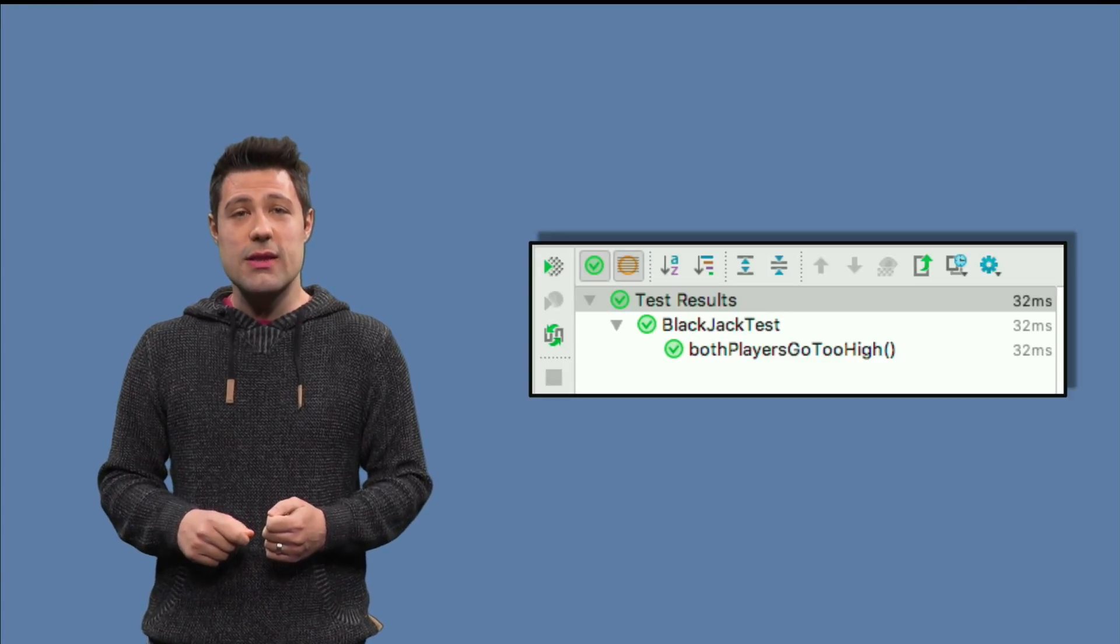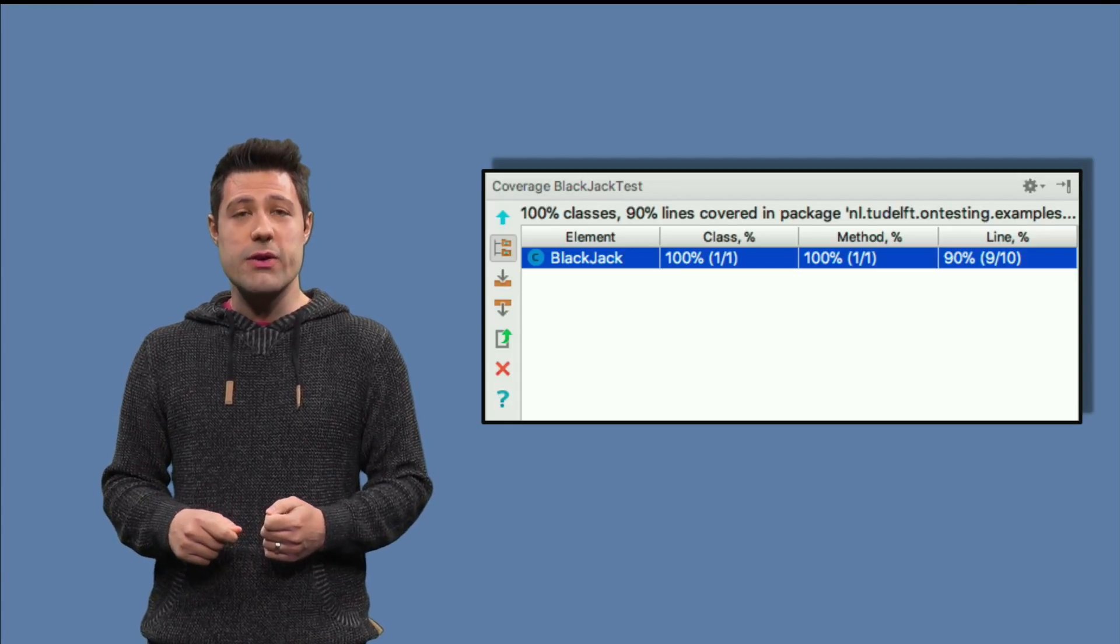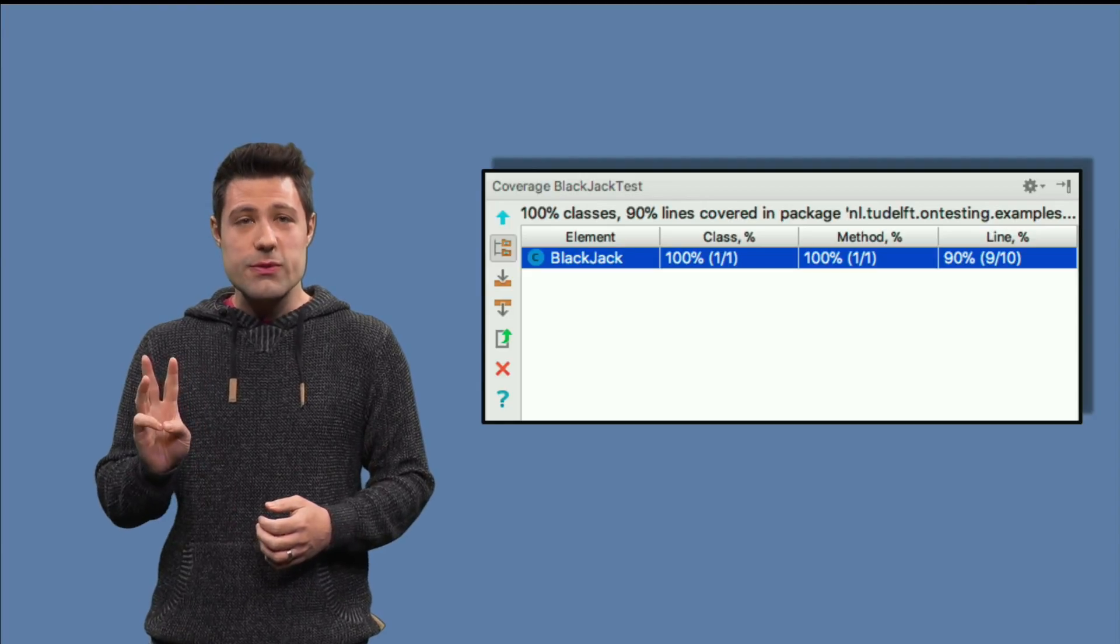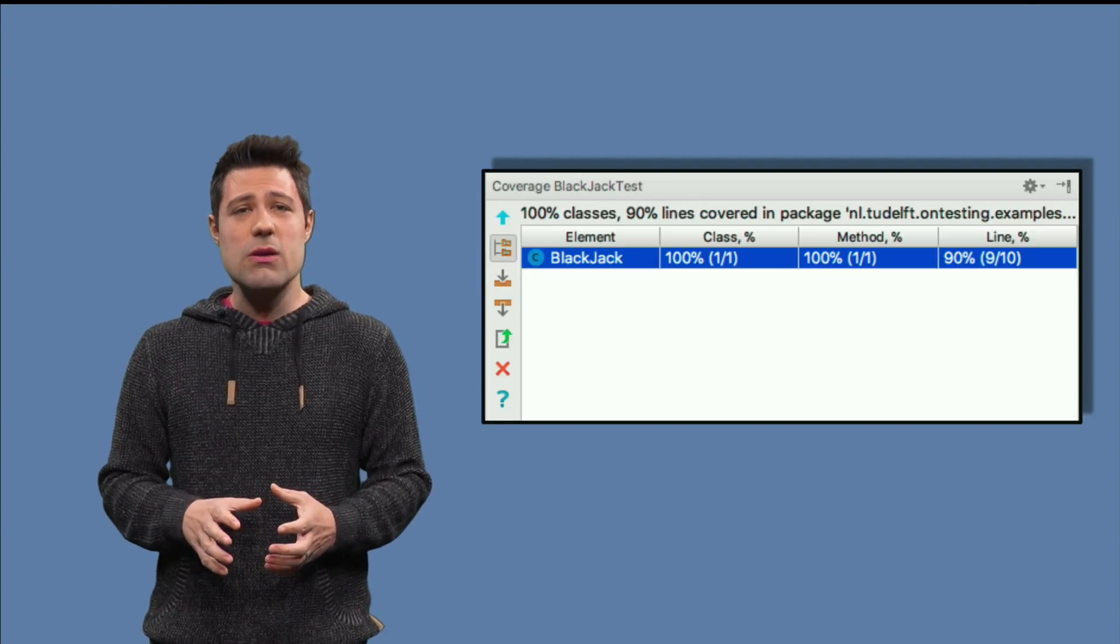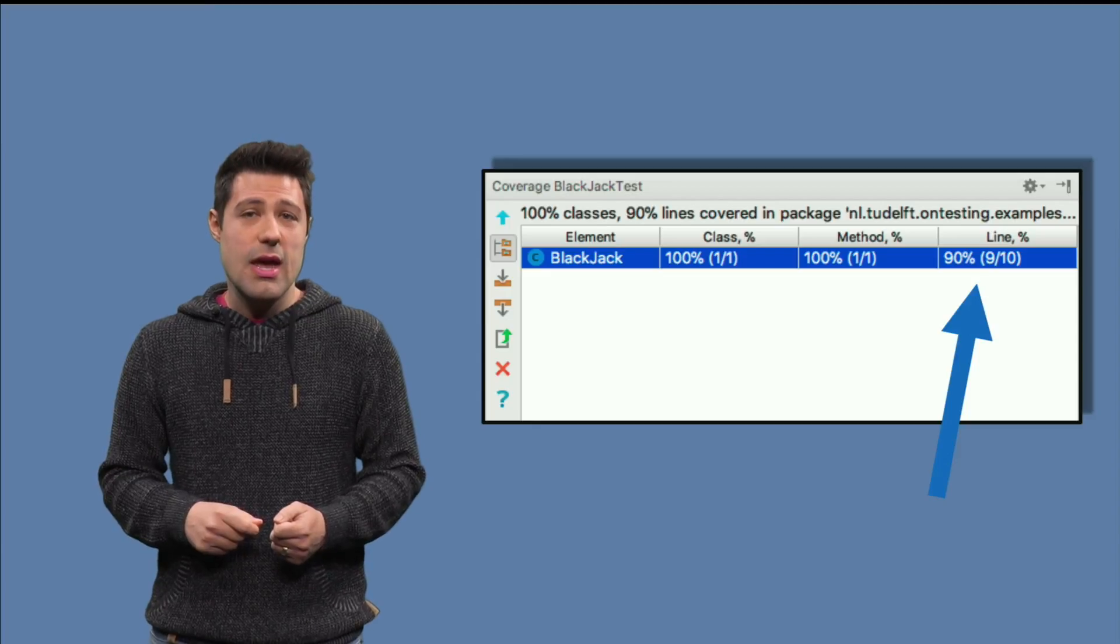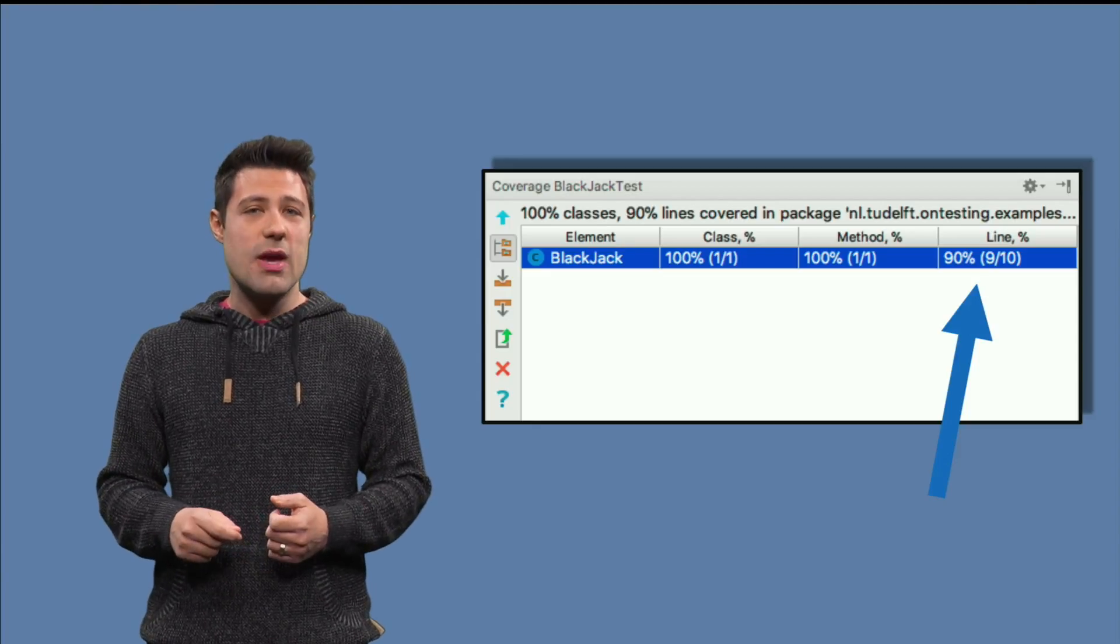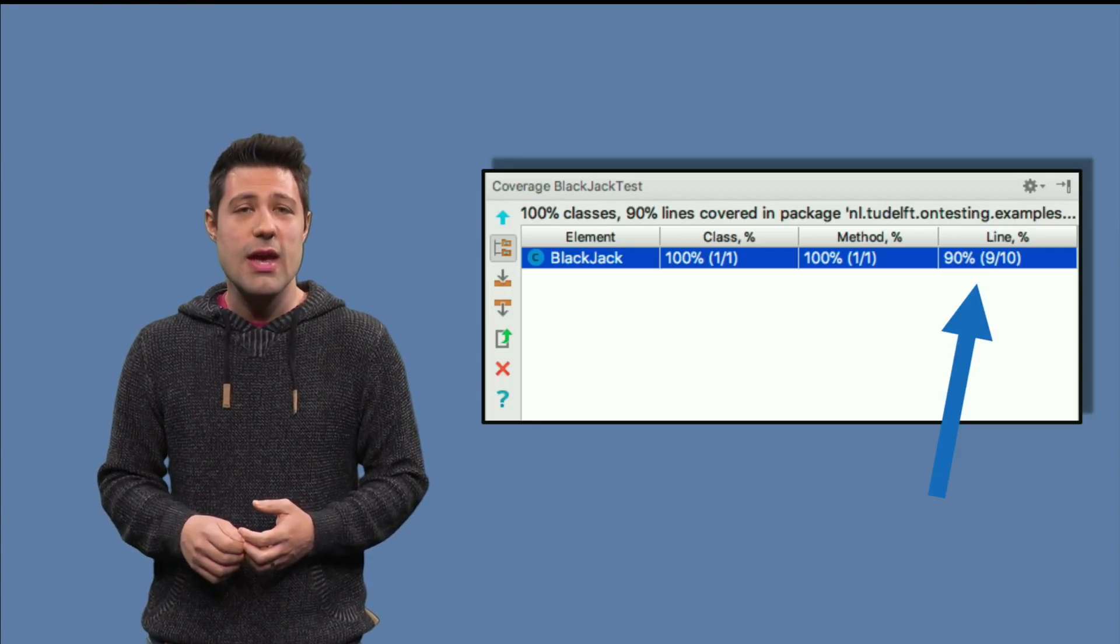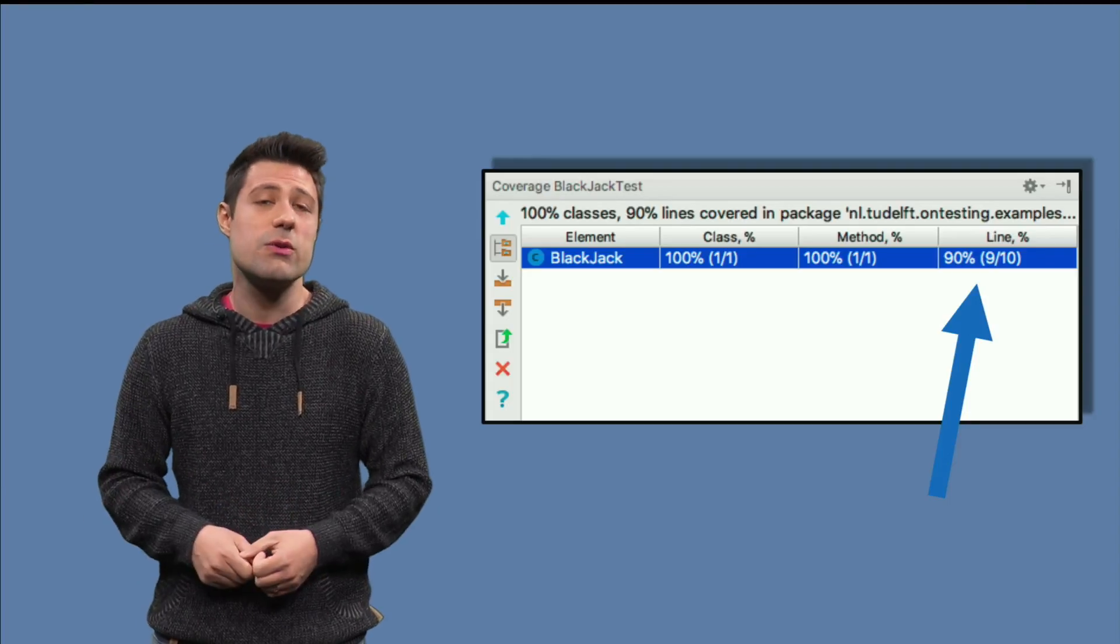Next, we can look at the coverage window that appeared in our IntelliJ. It shows us three numbers, but the only one we care right now is the line coverage. As we can see, IntelliJ says that we have 90% line coverage, as 9 out of the 10 lines were executed by a test.